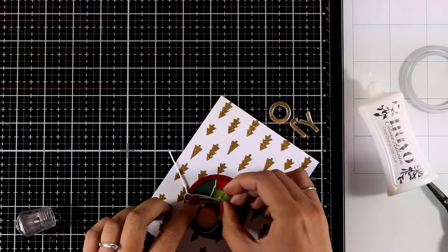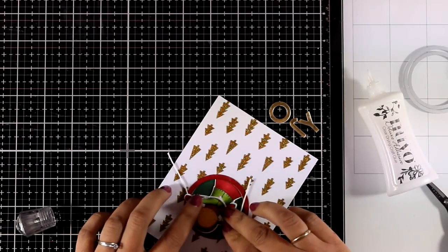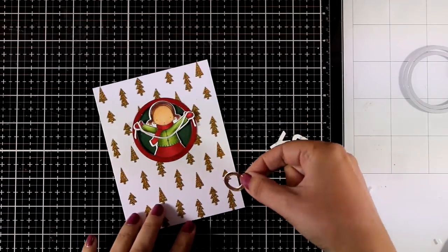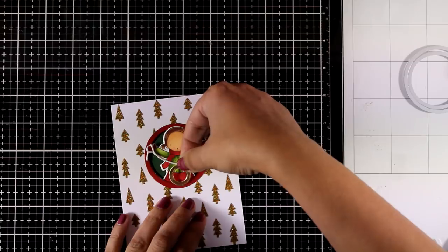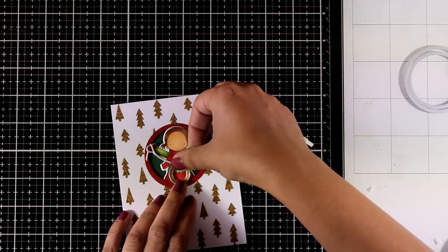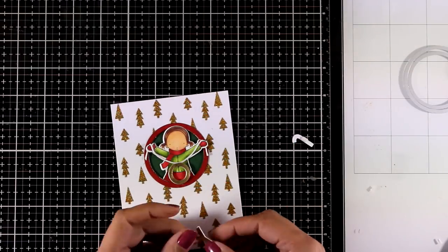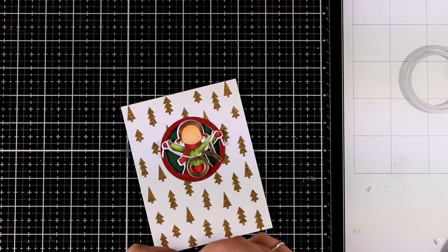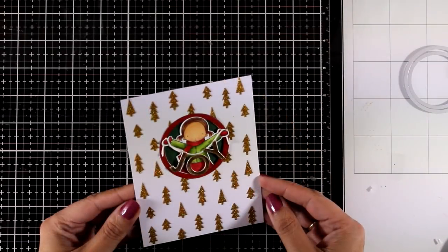If you have any tiny alphabet die set then you can cut out other words such as peace for example or merry, and just stick them across the line. I'm using tiny little foam squares that I cut out with my scissors at the back of the letters to give them some pop. I'm going to call this card done.